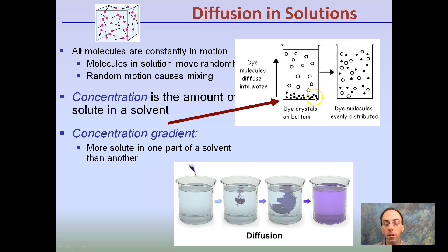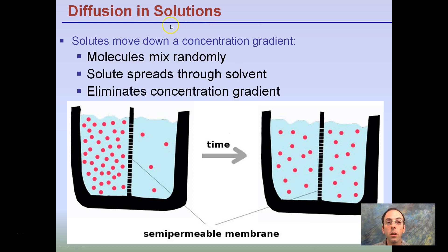Same thing here. Dye crystals, in this case, are at the bottom, and they're getting evenly mixed over time. Now, if we heat up, in this case if this is water, if we heat up the water, this can occur at a faster rate. Diffusion in solutions: our solutes move down the concentration gradient. Molecules mix randomly. Solute spreads throughout the solvent. It eliminates concentration gradients. Here, we have a concentration gradient. Over time, we have basically an equal amount on both the left and right side. And this occurs just through the movement of the water molecules.